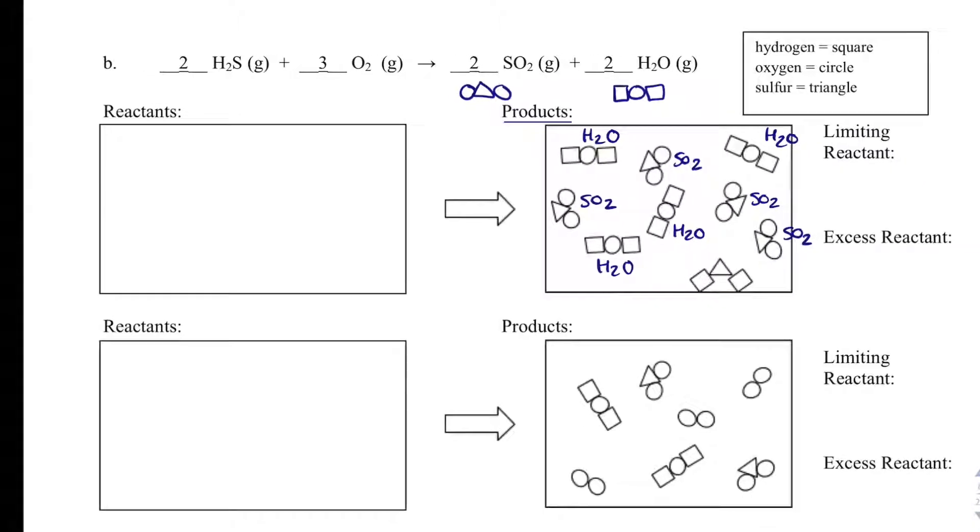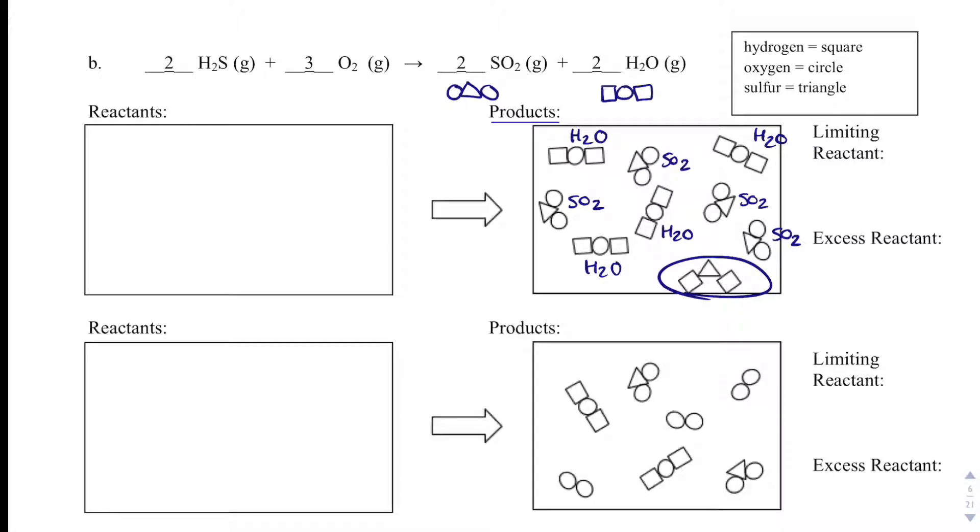And then I have this weird square, triangle, square right here. And if I look at the key, square is hydrogen, triangle is sulfur. So that's actually H2S, which is not one of the products. What that means is that this is actually my excess reactant. And so I can actually already answer this question. I have left over H2S. And then that leaves oxygen must have been my limiting reactant because there was no more left over.